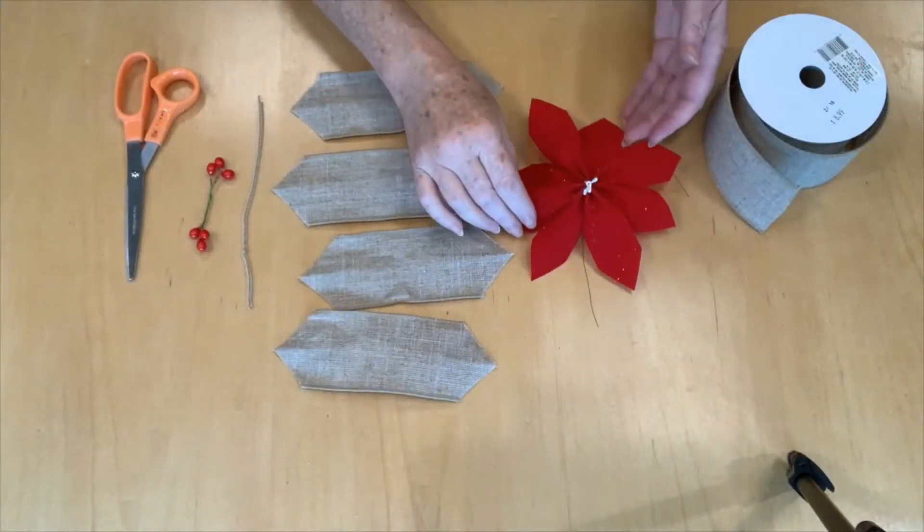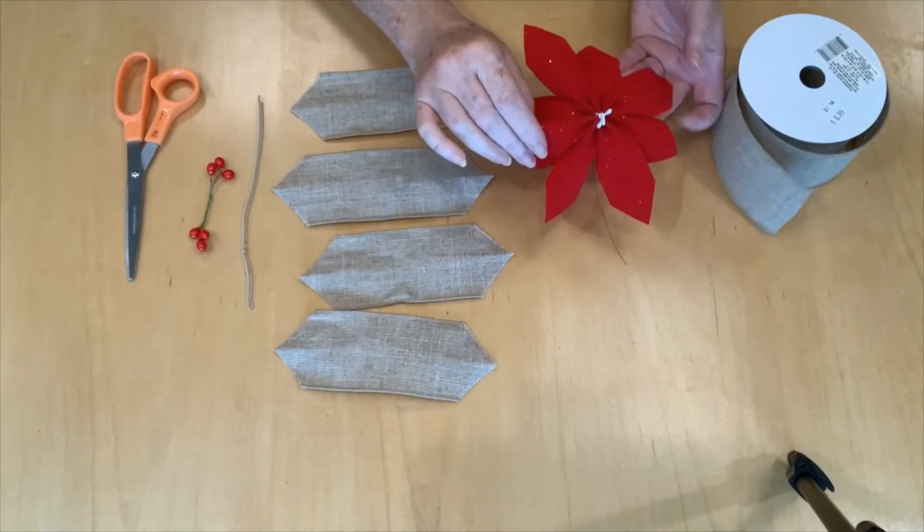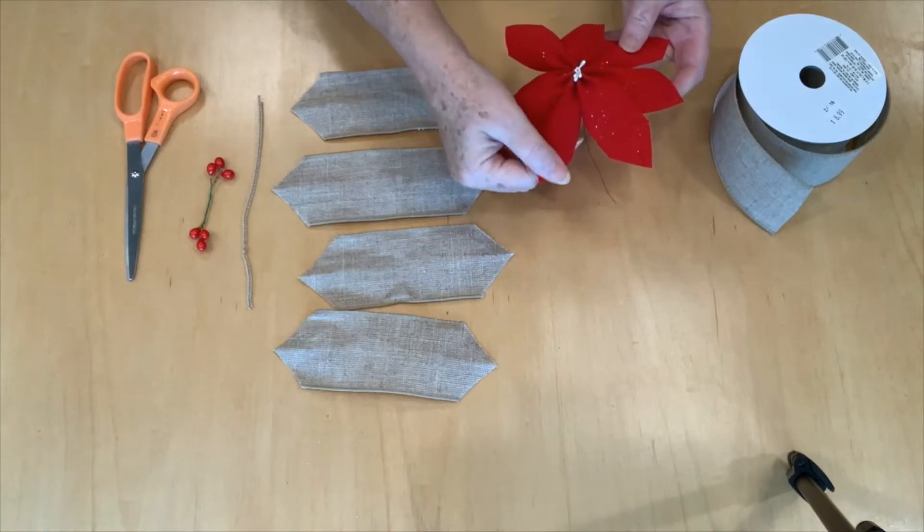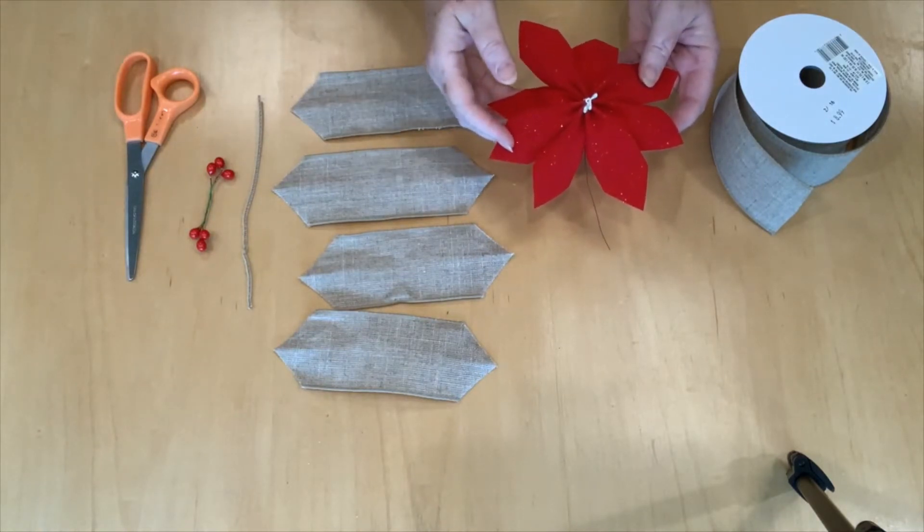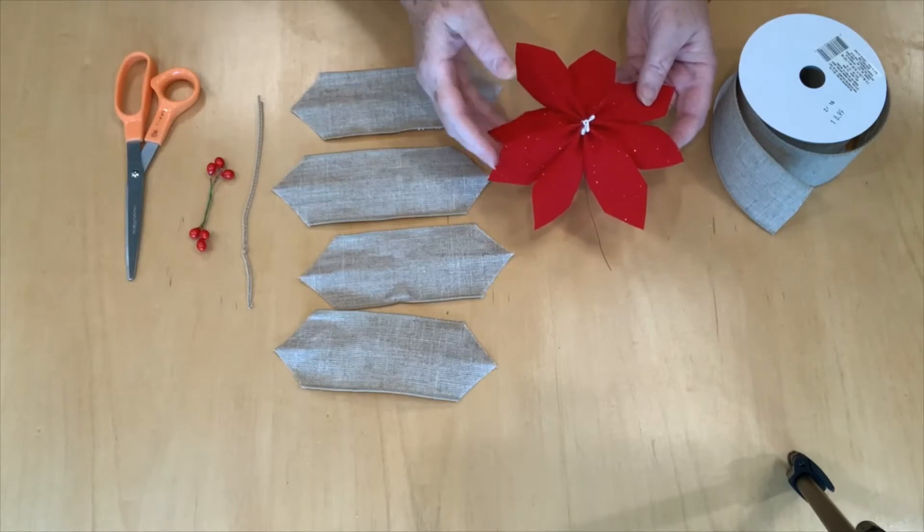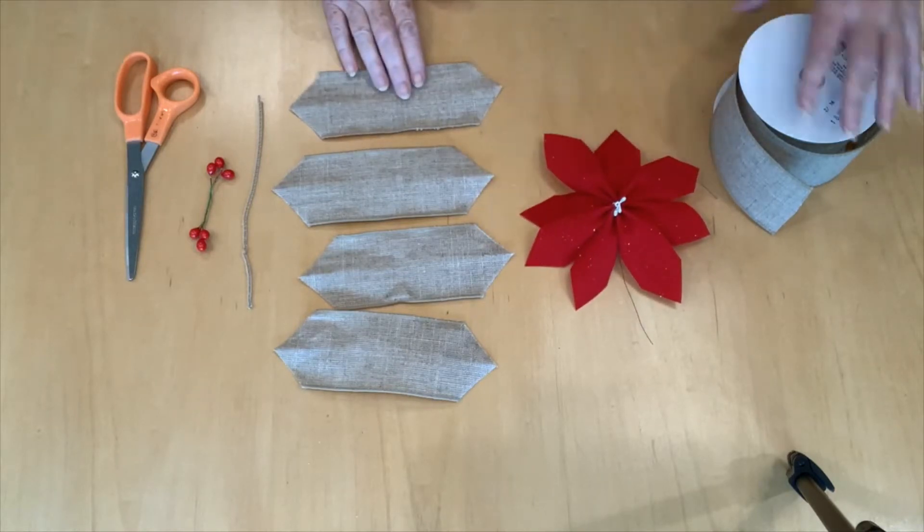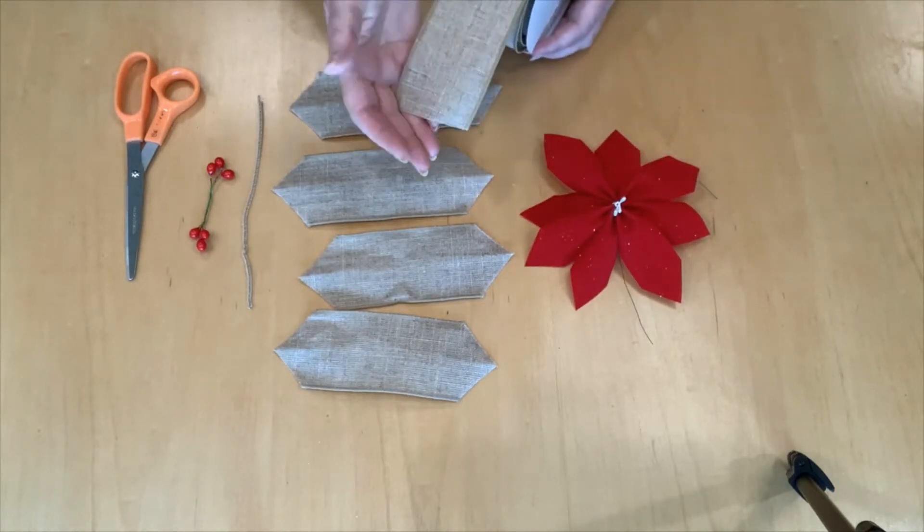Our first bow is going to be this lovely poinsettia bow. This is made with a chenille fabric but it doesn't need to be. You can make it out of anything that appeals to you. In this case I'm going to use burlap. It is a wired ribbon here.